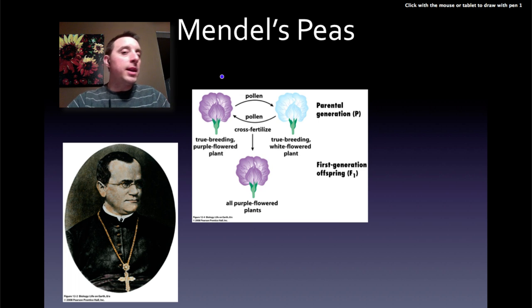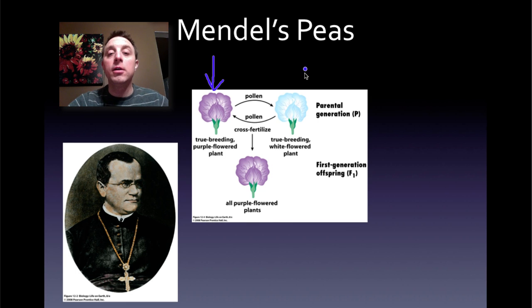He was in charge of the gardens there at the monastery where he lived and worked. So that gave him a lot of time to work with the peas and to study the inheritance patterns of them. And he chose a few traits, a few characteristics that he followed. One of them was the color of the flowers. Purple, these guys right here, and white, white flowers right there. The white's a little bit hard to see against the background.